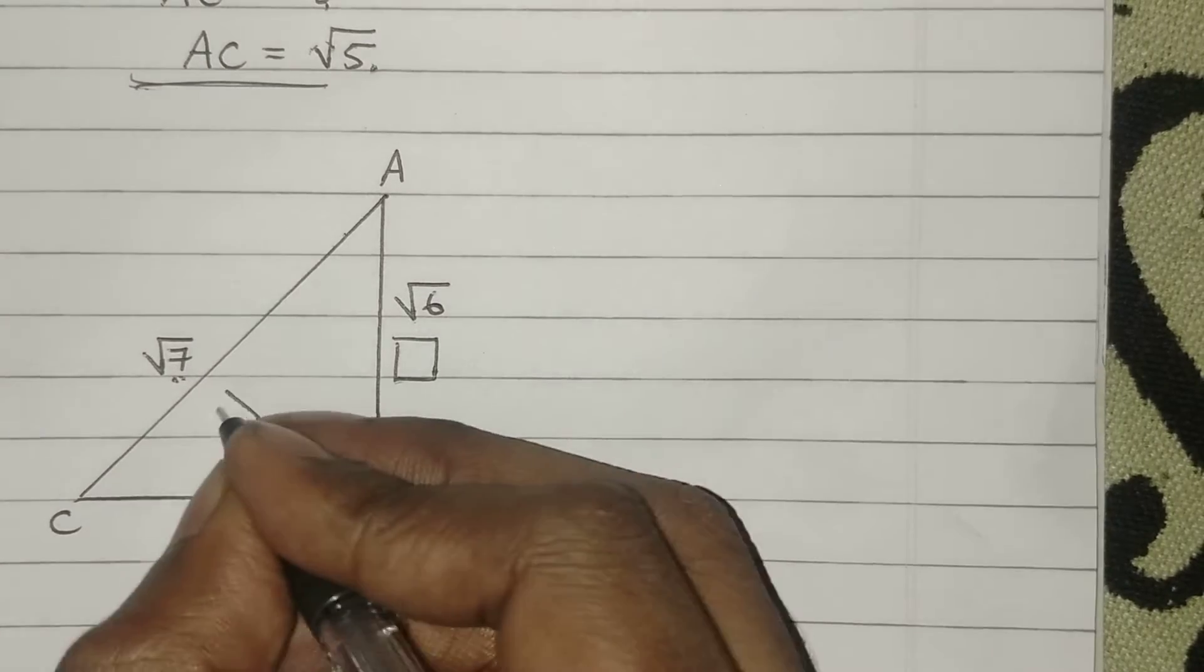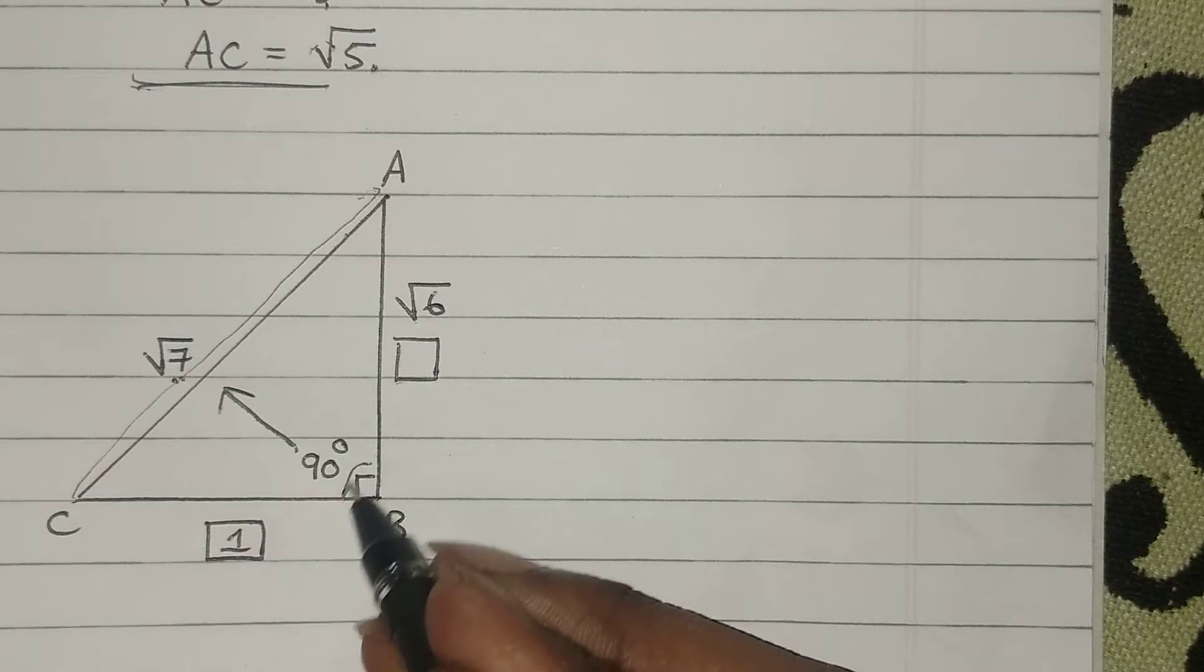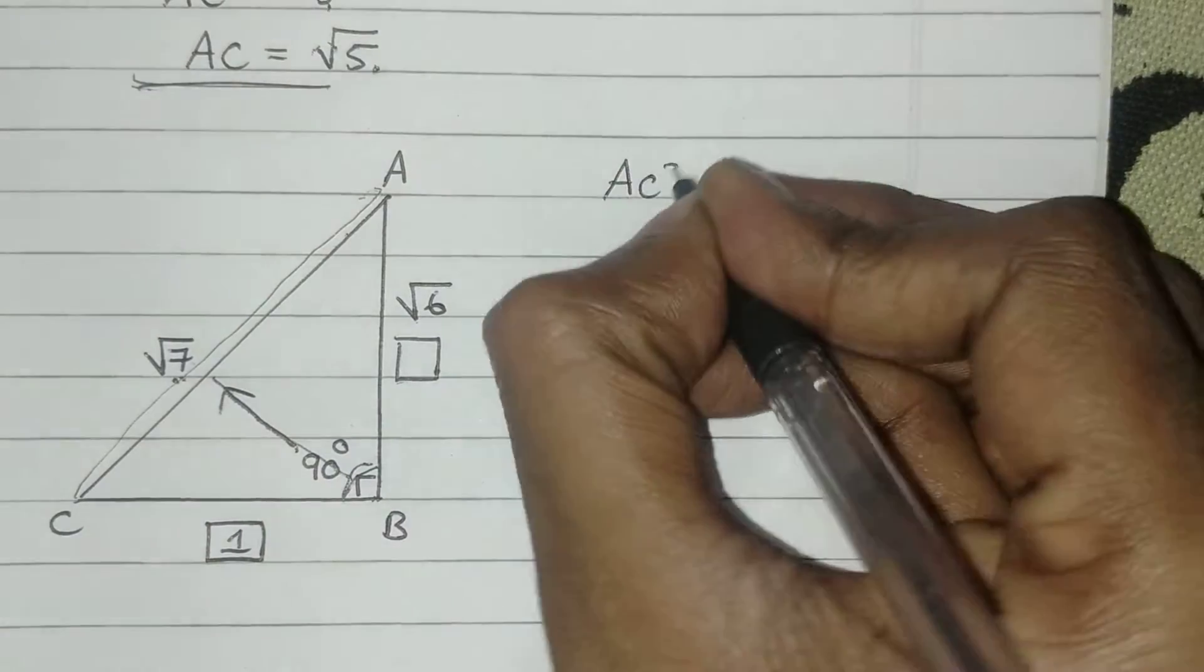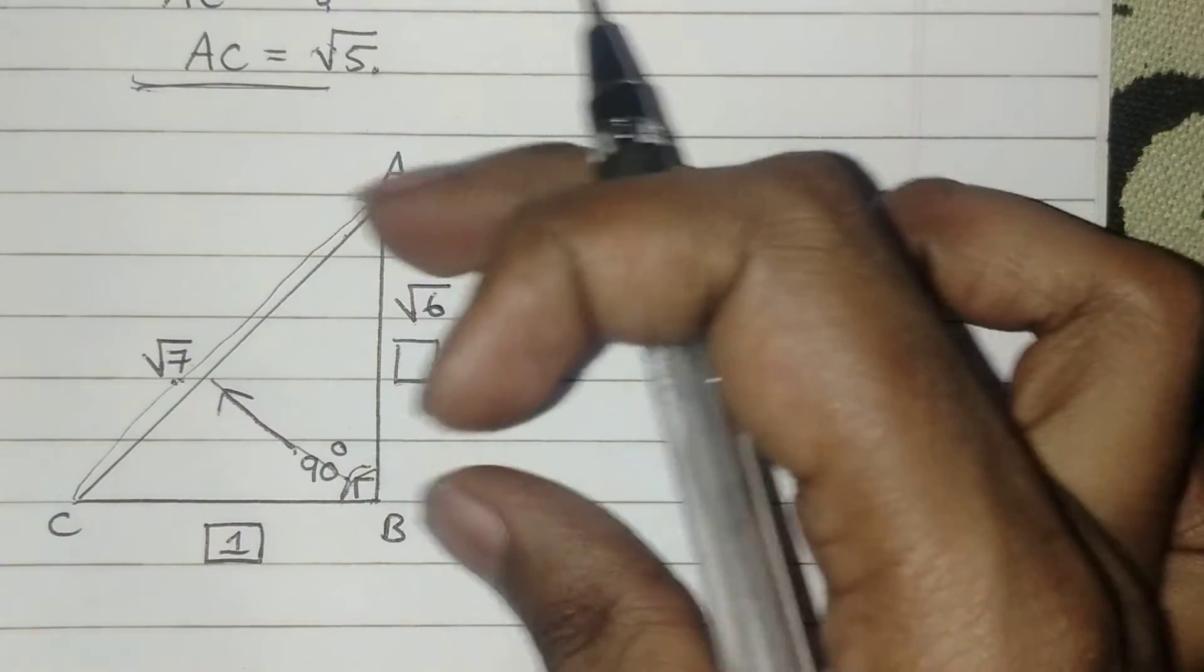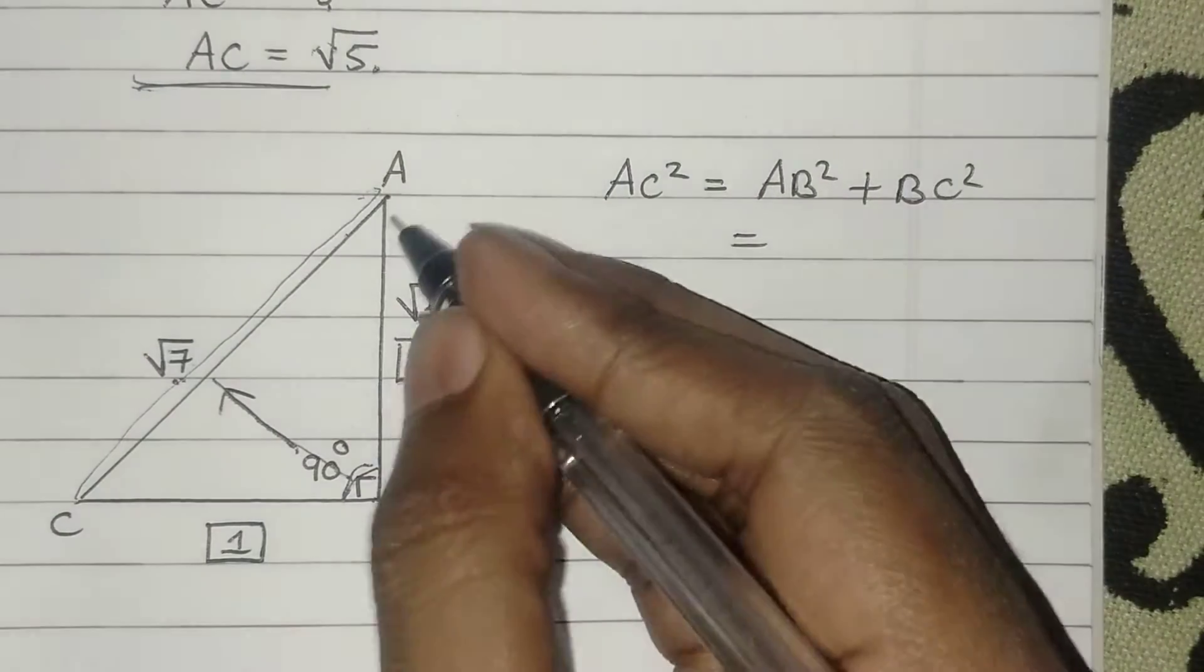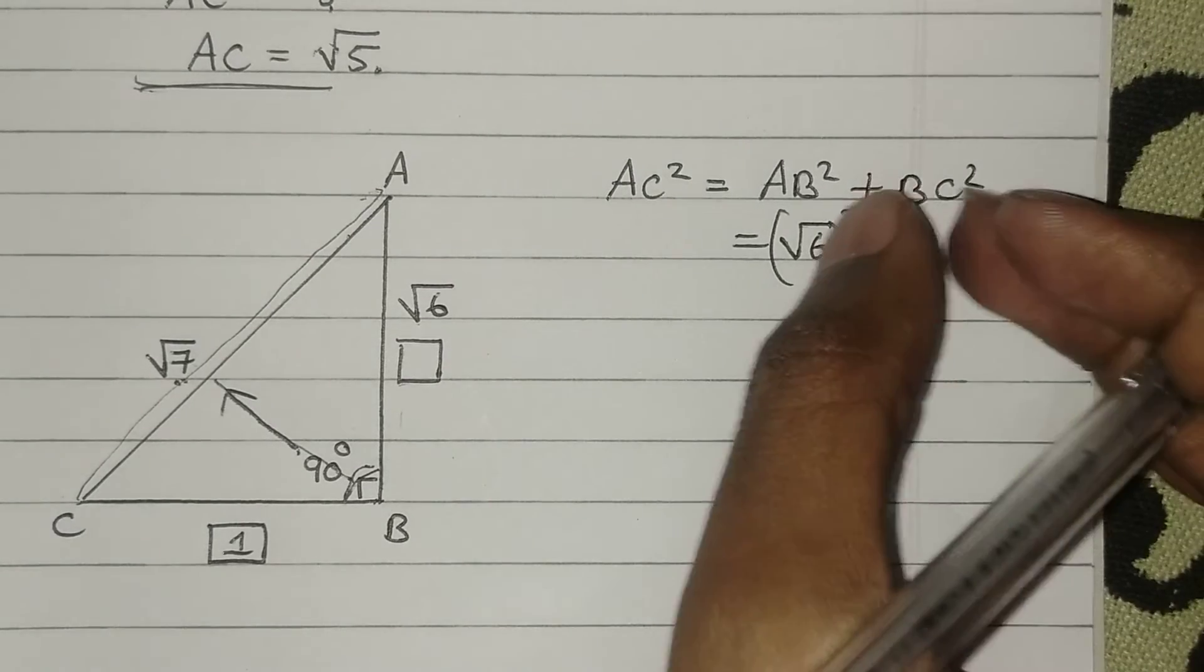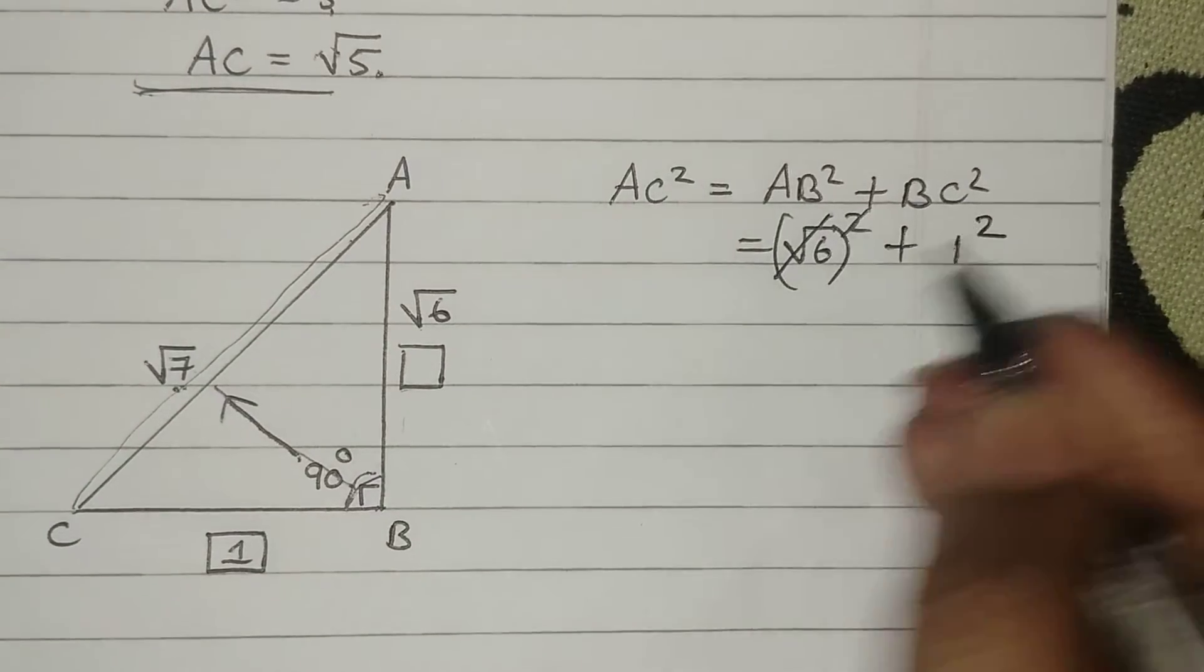Yes, it is root 6 and 1. How? Because AC is my hypotenuse, any side opposite to 90 degrees is the hypotenuse. Pythagoras theorem says AC² equals the sum of other two sides, that is AB² + BC². If I consider AB as root 6 squared and BC as 1² you know root and square get cancelled.